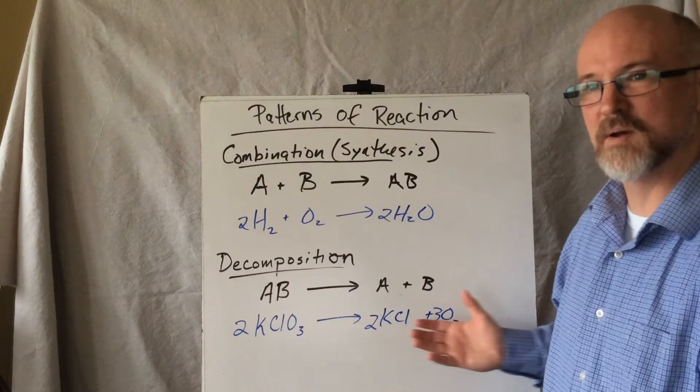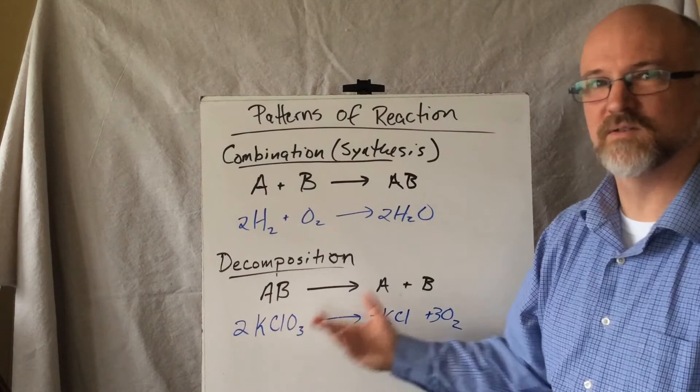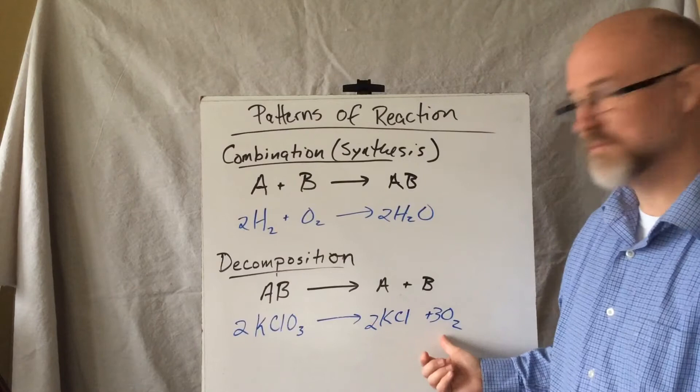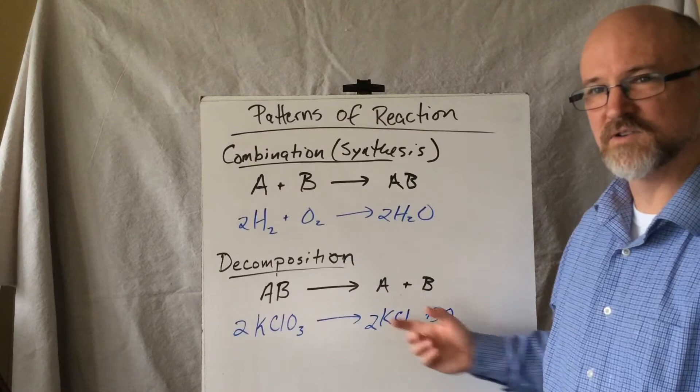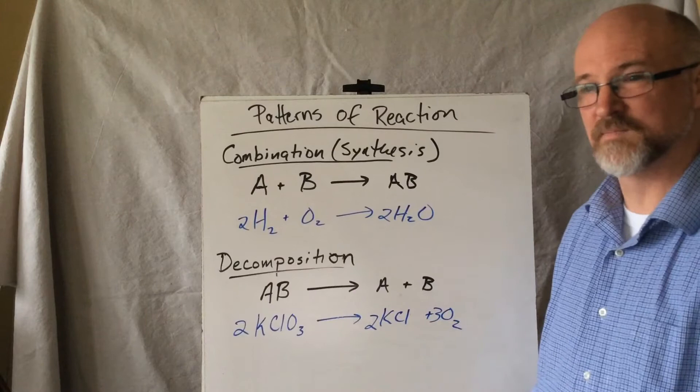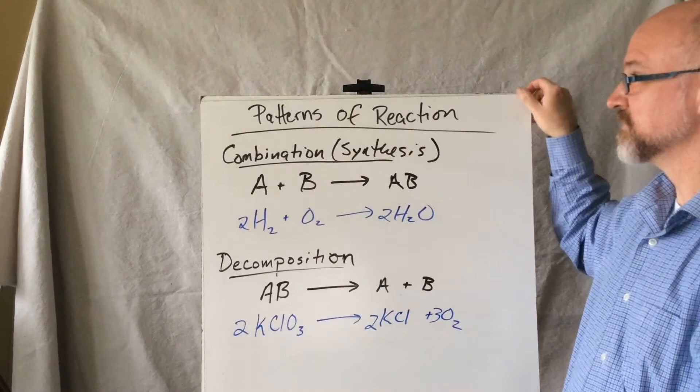So you start with one thing and you end up with multiple products. Here's an example with potassium chlorate, which by the way is a solid rocket fuel additive because it produces oxygen when it decomposes. So here we have one compound that breaks down into a smaller compound and an element. It doesn't always have to be just pure elements, but we start with one thing and we end up with more than one thing. So the falling in love and the breaking up.